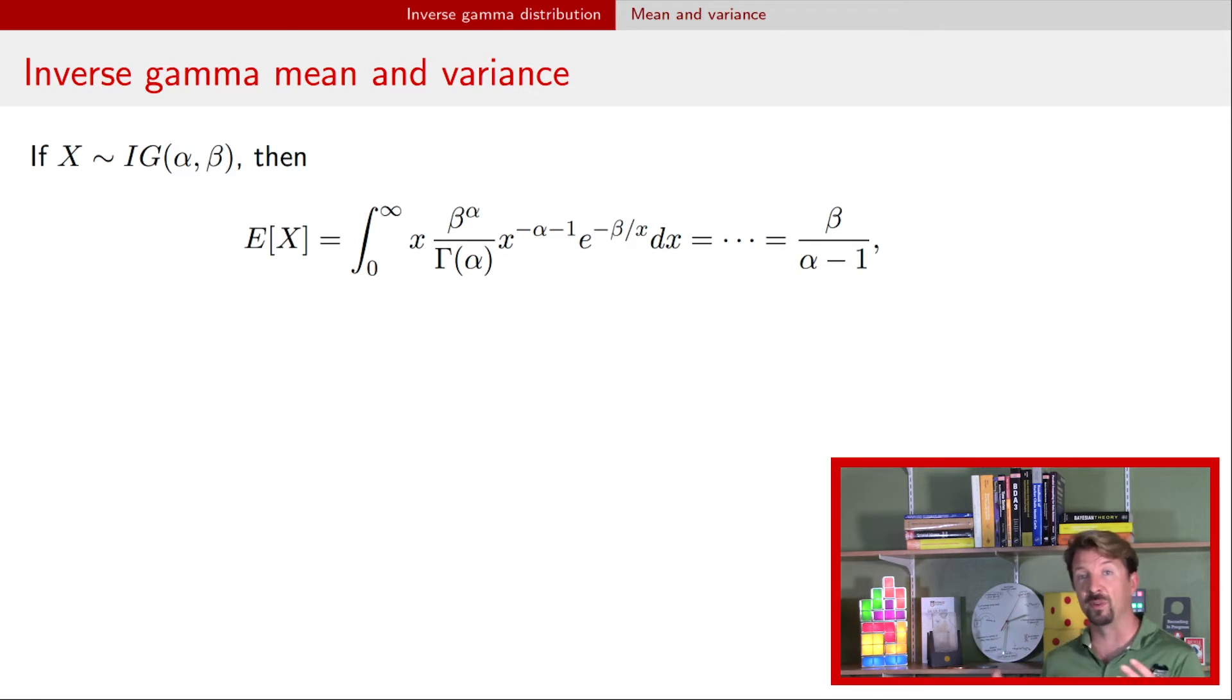So if it happens to be between 0 and 1, well, you'd have a negative expectation, and that seems a little weird, because we know the support for this random variable is for strictly positive reals. Maybe even weirder if alpha happened to be 1, we would get an infinite expectation, and so this formula is actually only valid for alpha being greater than 1. For alpha less than or equal to 1, we don't actually have an expectation.